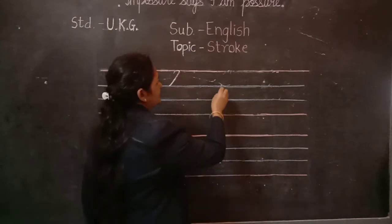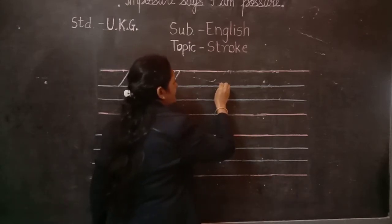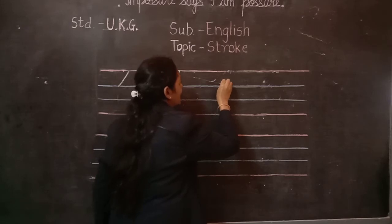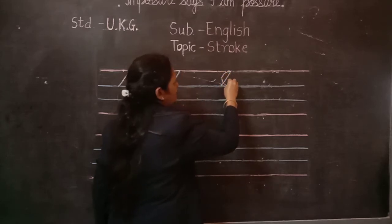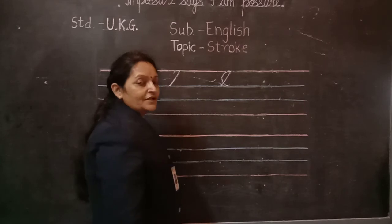Now, first row is blue line to red line, slanting line, come down. With the help of curve, touch to the first blue line. Understood, all of you?